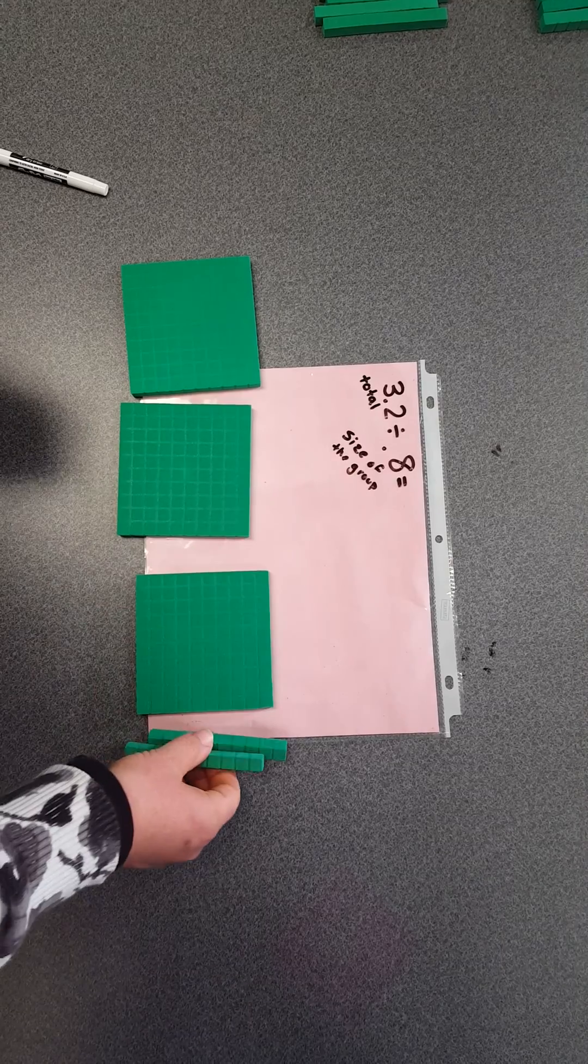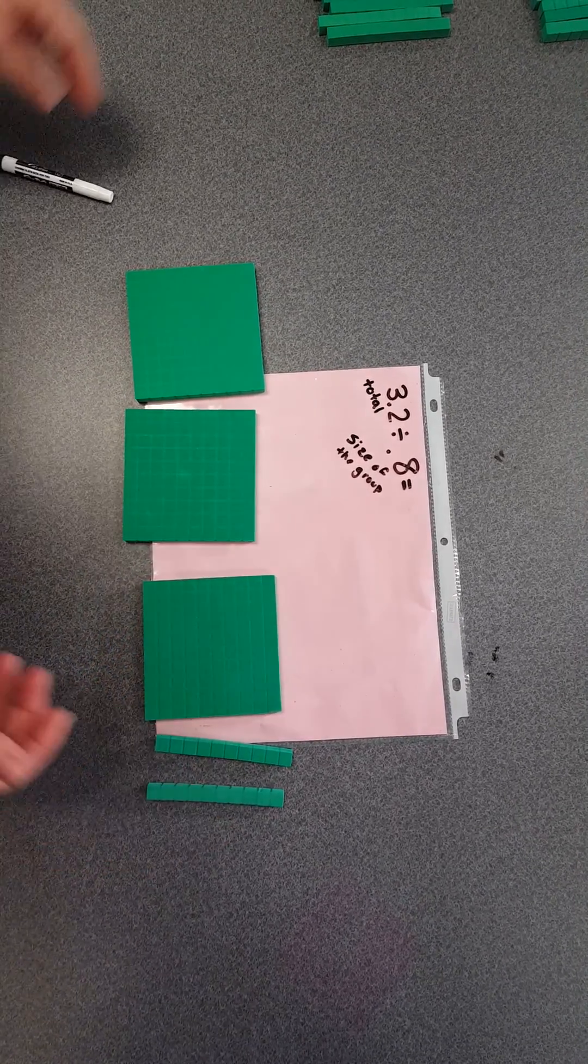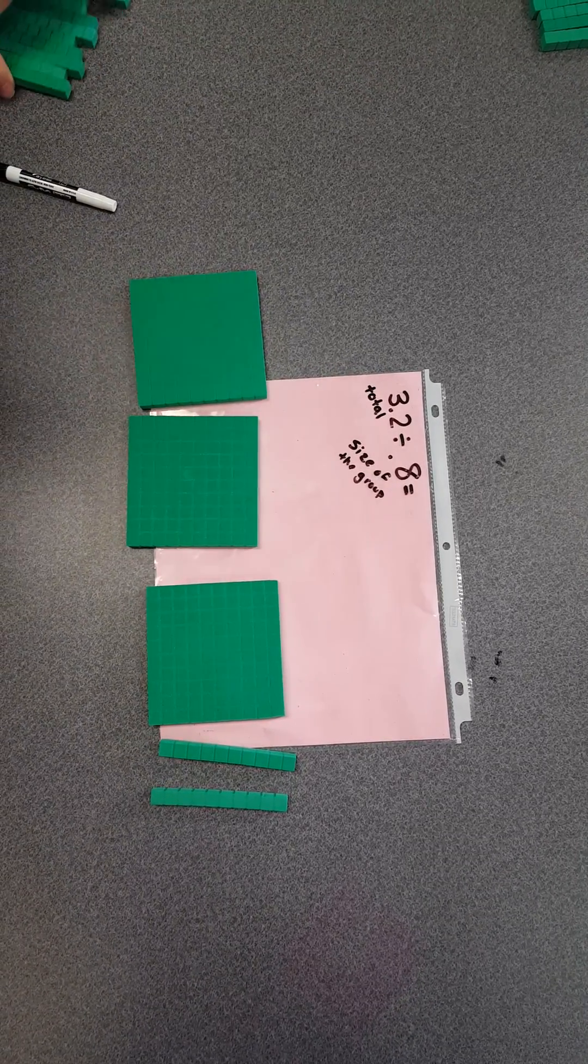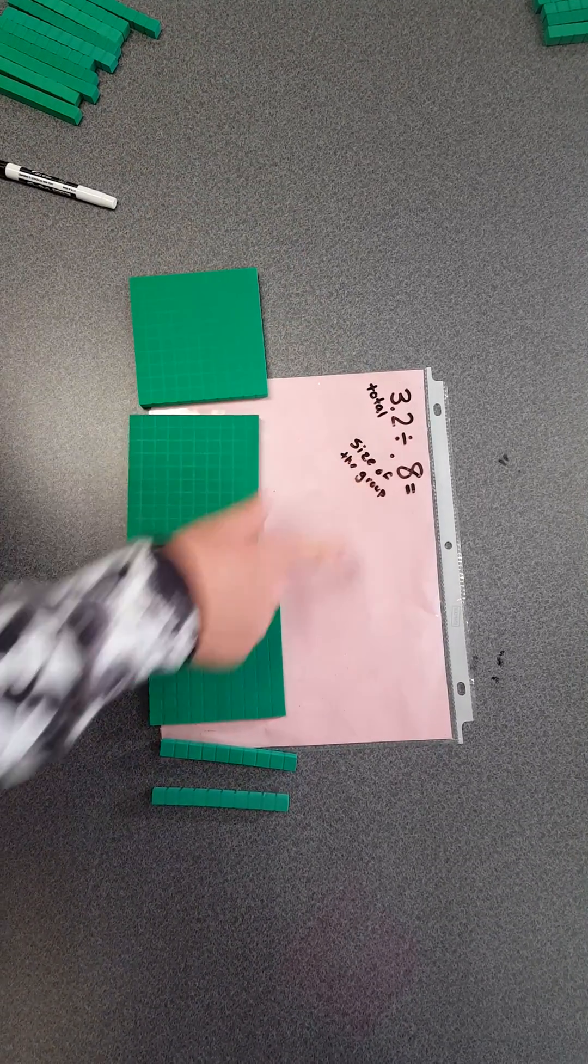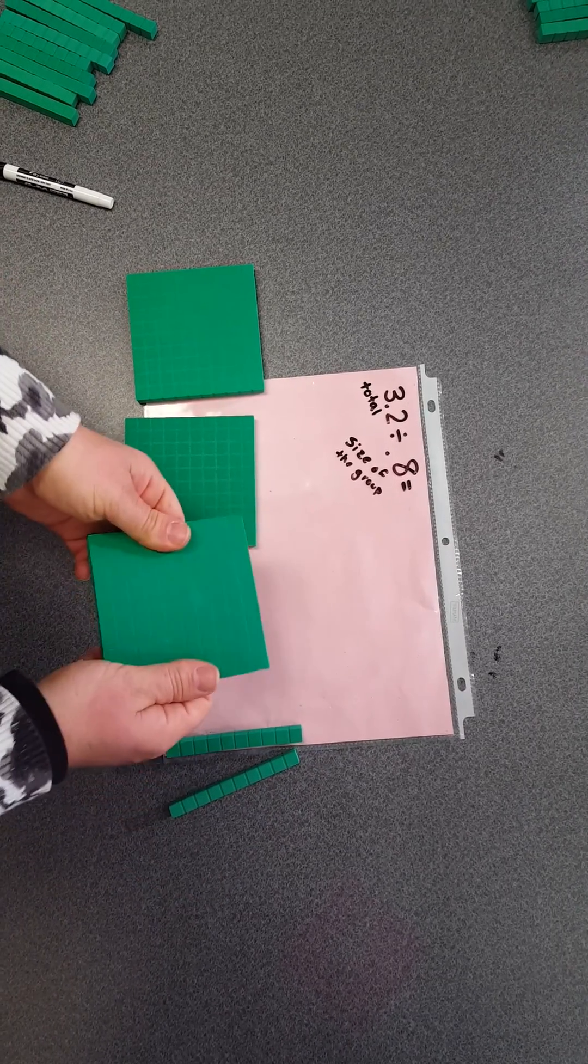Building 3.2, knowing that this is going to be the size of my whole, would look like this. Your students have done that a lot when working with decimals. I can't divide it into groups that are 0.8 big with my manipulatives here, so I need to break apart my wholes.